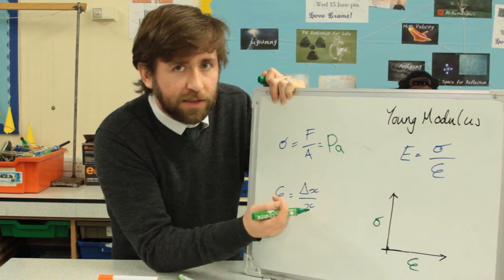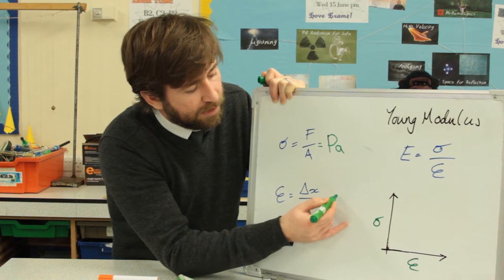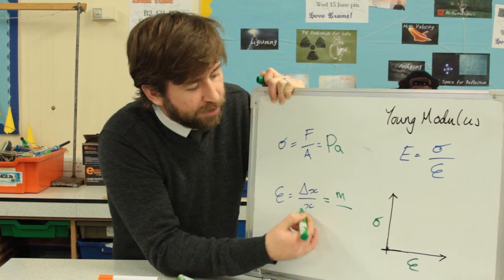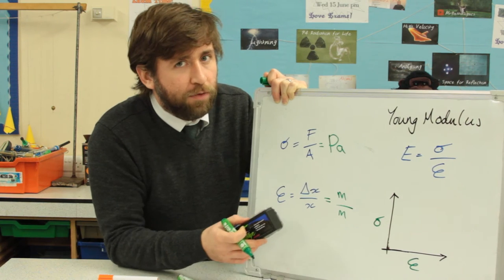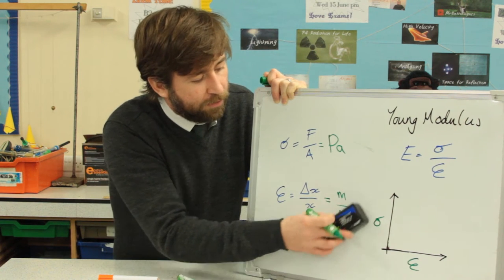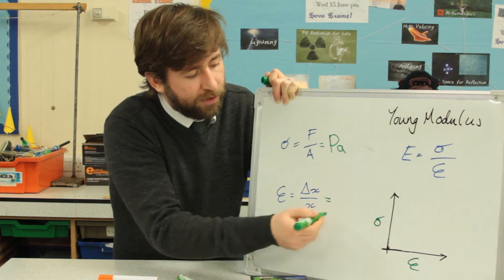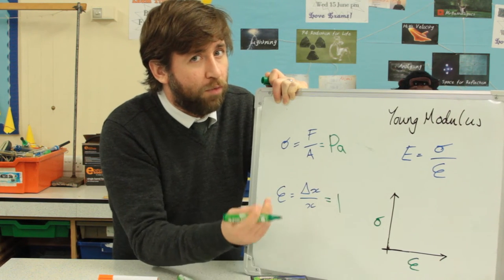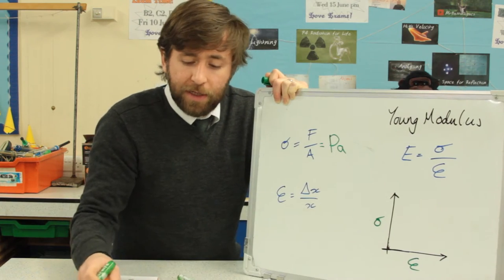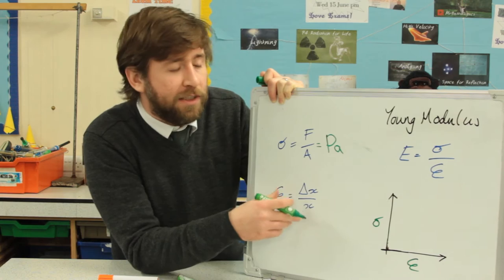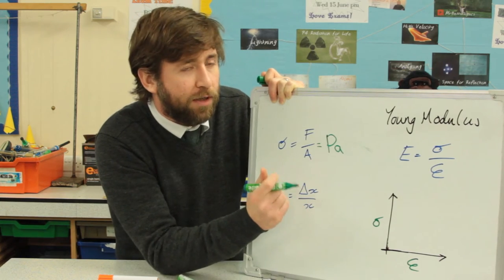What are the units for strain then? Well, Δx extension is in metres, and original length is also in metres. So therefore the units of strain are non-existent. Metres divided by metres is one. It doesn't have a unit. It's a ratio. You could discuss it as a percentage, and then you'd be multiplying it by 100.